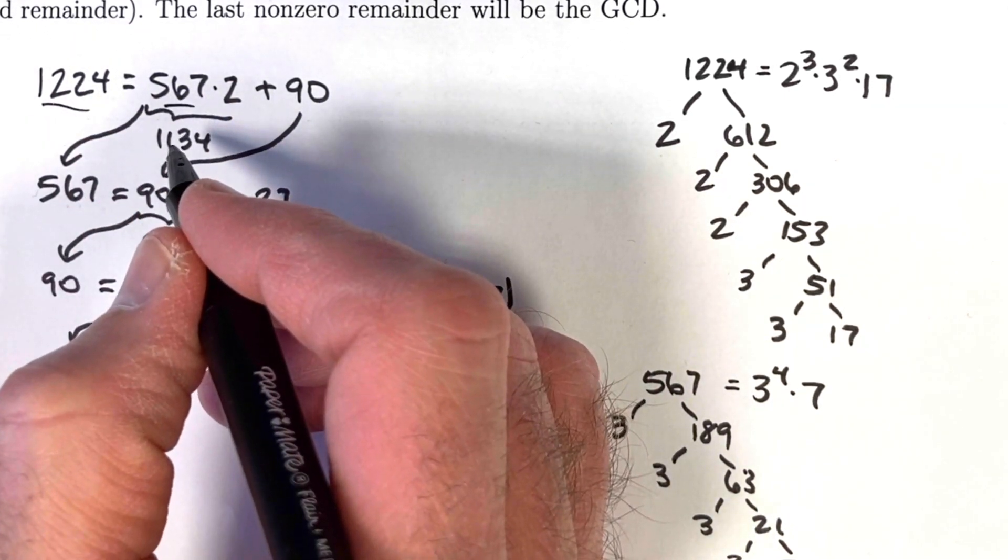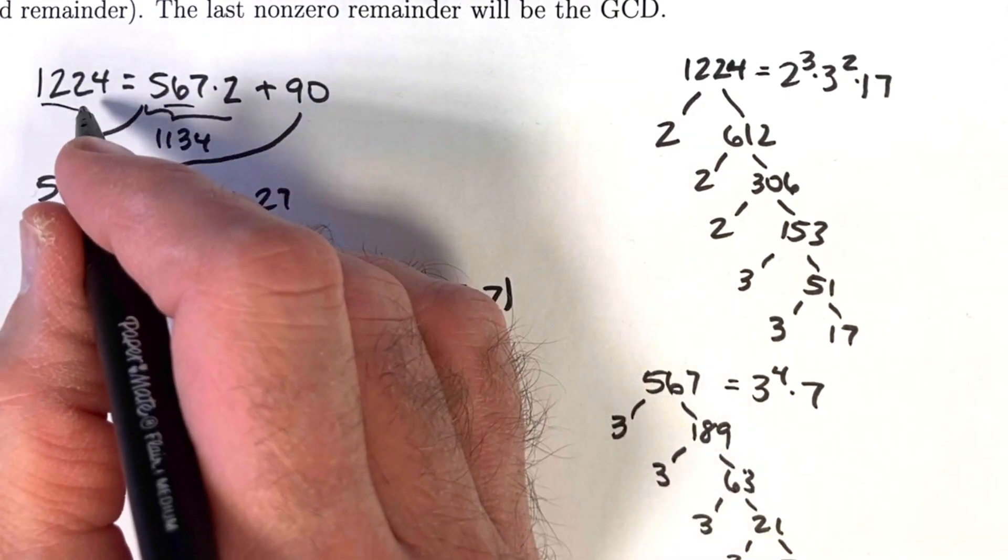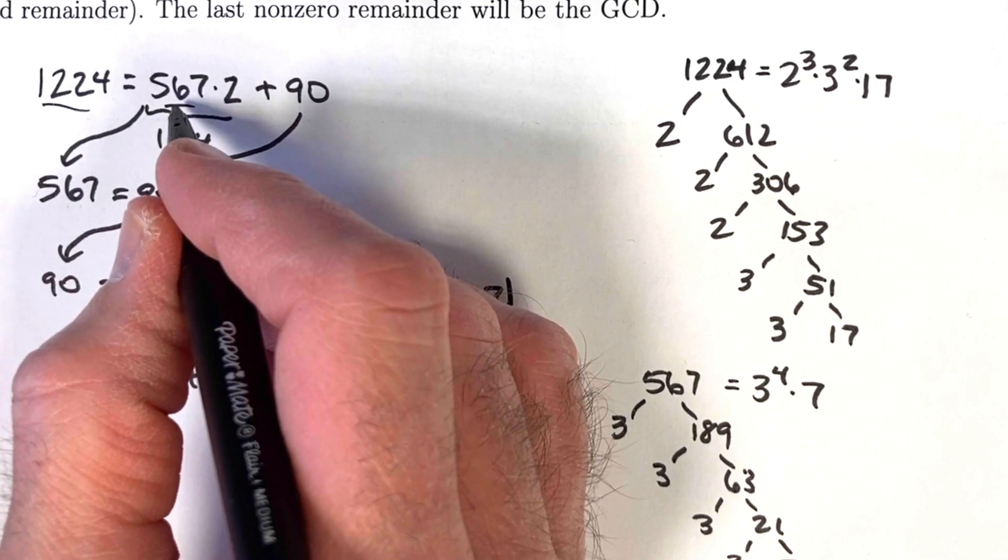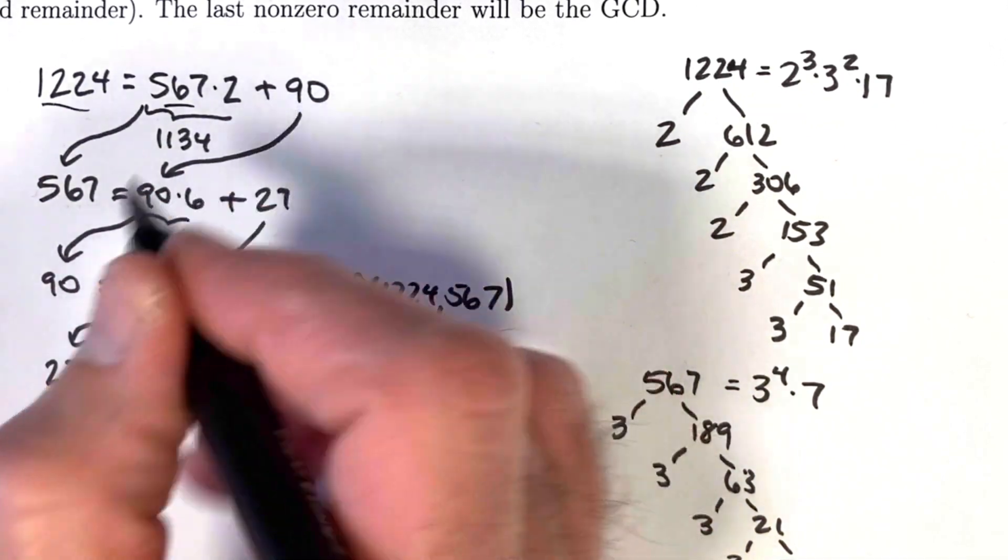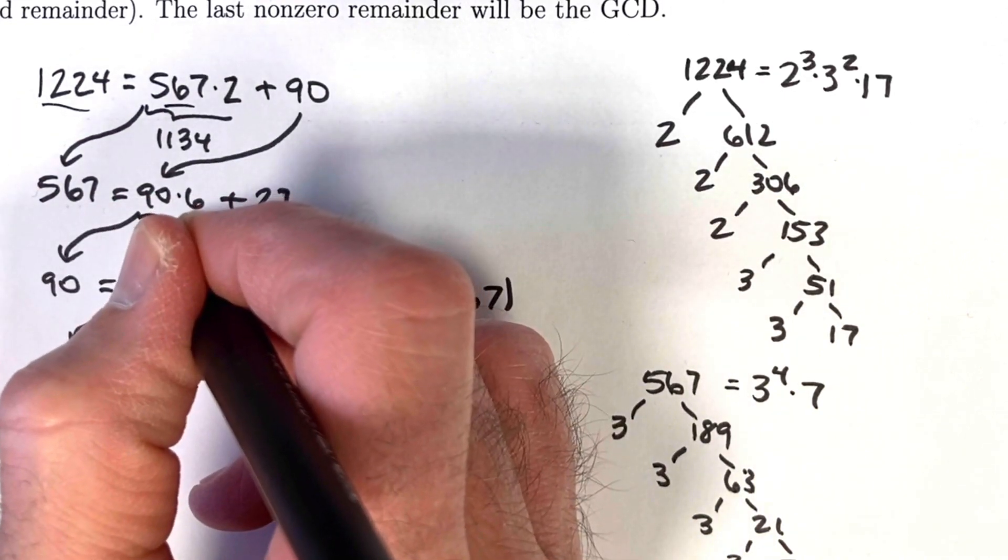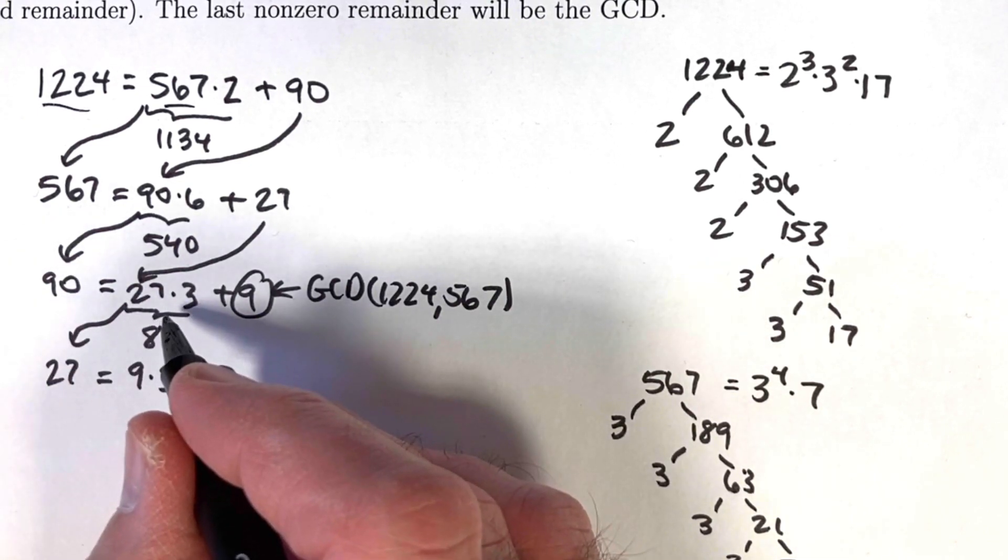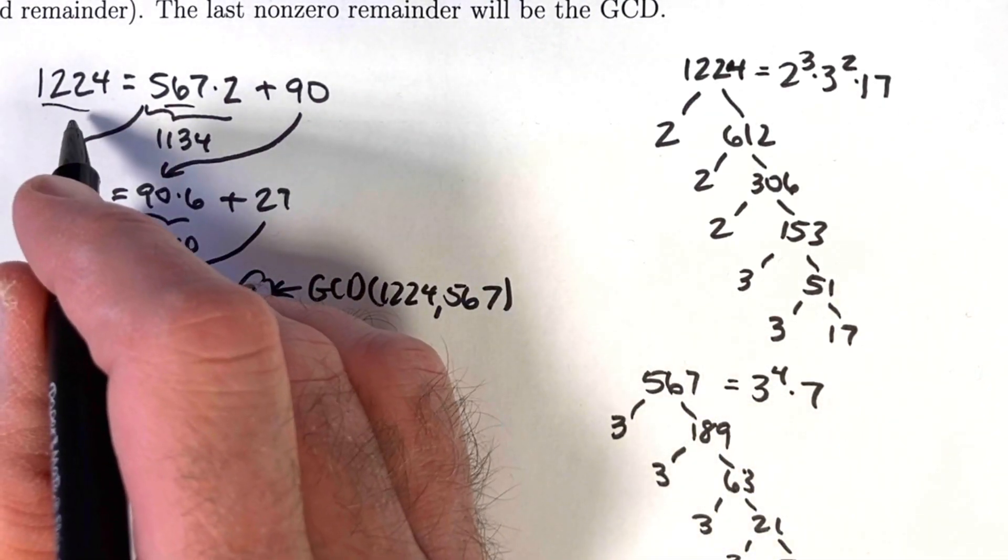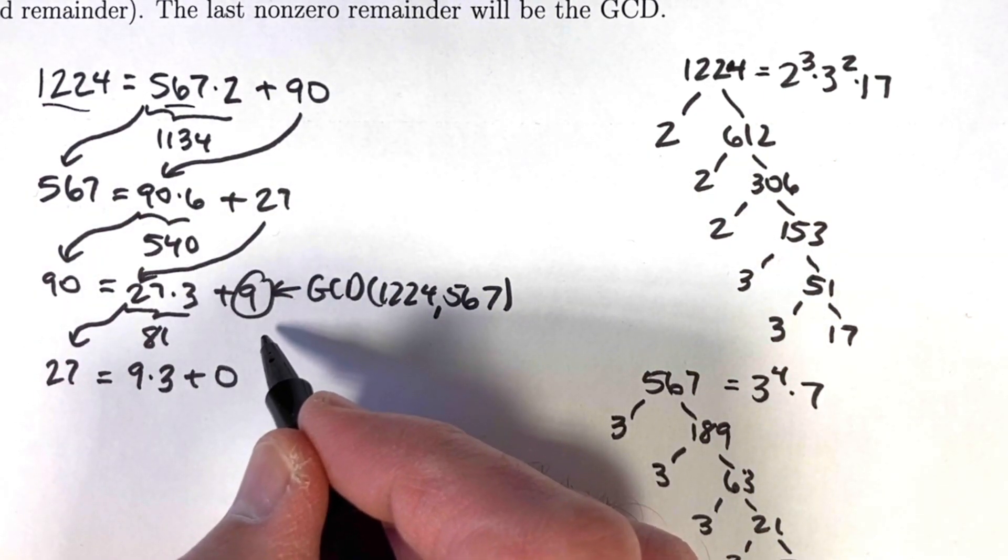Why is that the greatest common divisor? Because of this first equation, any given divisor of 1224 and 567 will also divide 90 by solving this equation for 90. So it will also divide 27 by solving this equation for 27. So it will also divide 9 by solving this equation for 9. Any common divisor of 1224 and 567 must divide 9. Therefore, 9 must be the greatest common divisor. Thanks for watching.